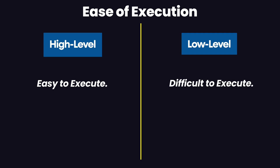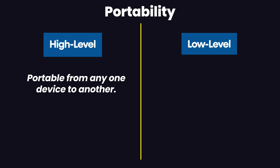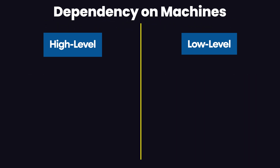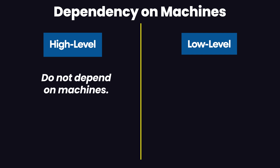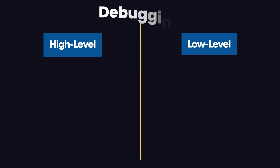Adding the factor of portability: high level languages are extremely portable, meaning the same code can run on multiple machines, whereas low level languages are not portable — a user cannot port them from one device to another. The main reason for this is that low level programming languages are totally machine dependent, while high level languages do not depend upon machines.